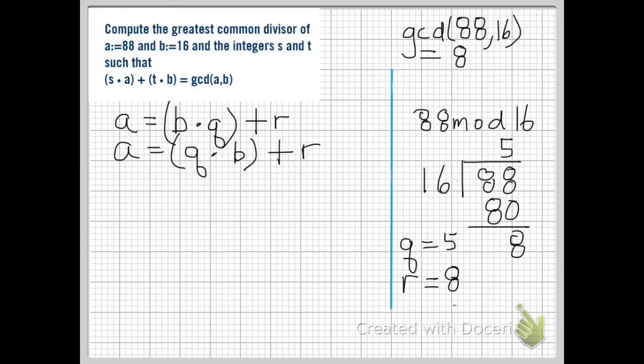First we rearrange our equation. We want q times b instead of b times q. Those are equal, but we notice that in Bézout's identity, it says t times b and b is on the right-hand side. So we want q times b. We want b to be on the right-hand side. We put in our numbers.